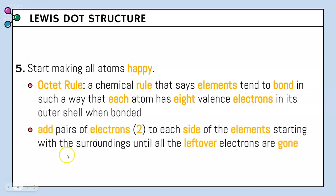We do this by adding pairs of electrons — two electrons — to each side of our elements, starting with the surrounding atoms until all leftover electrons are gone.